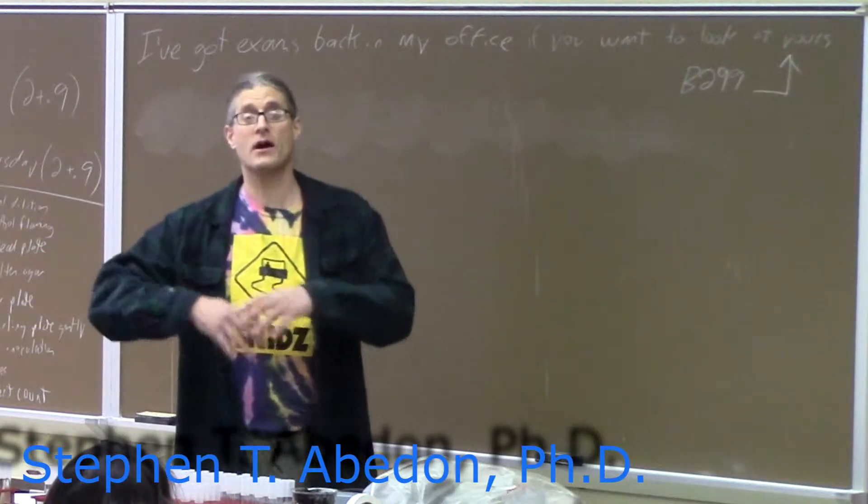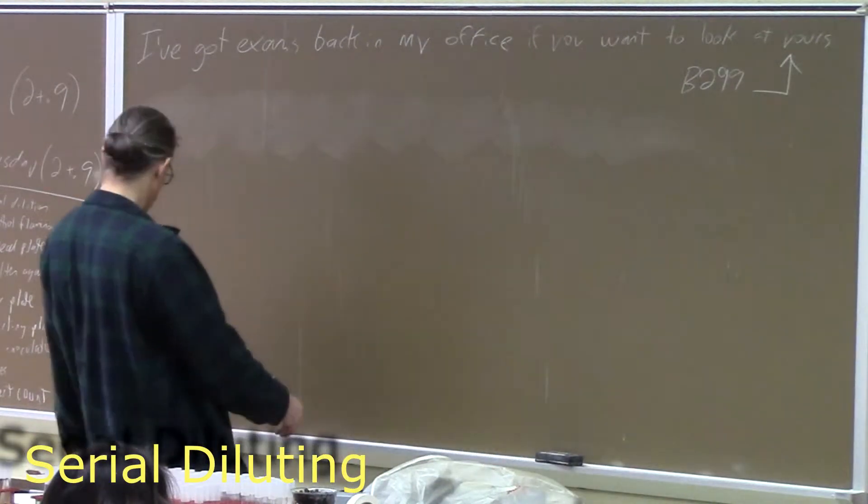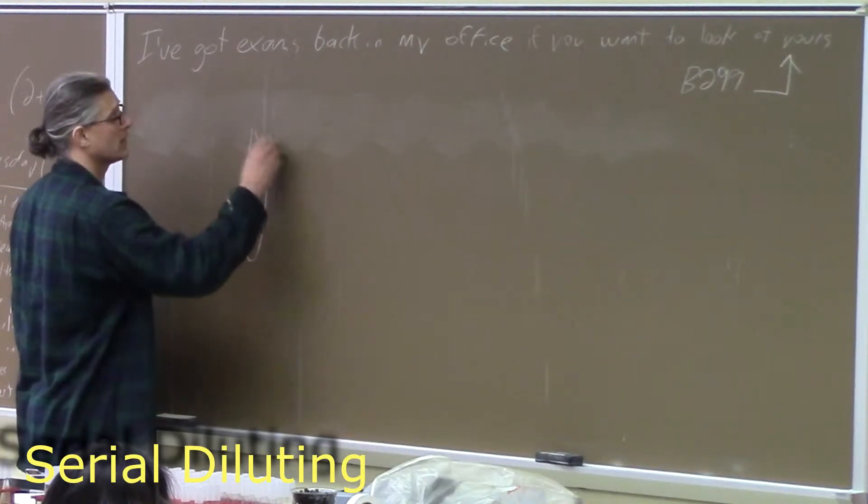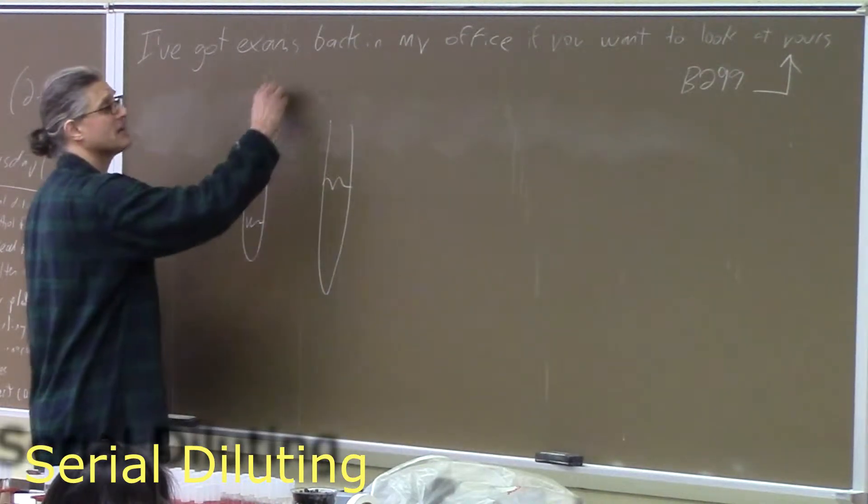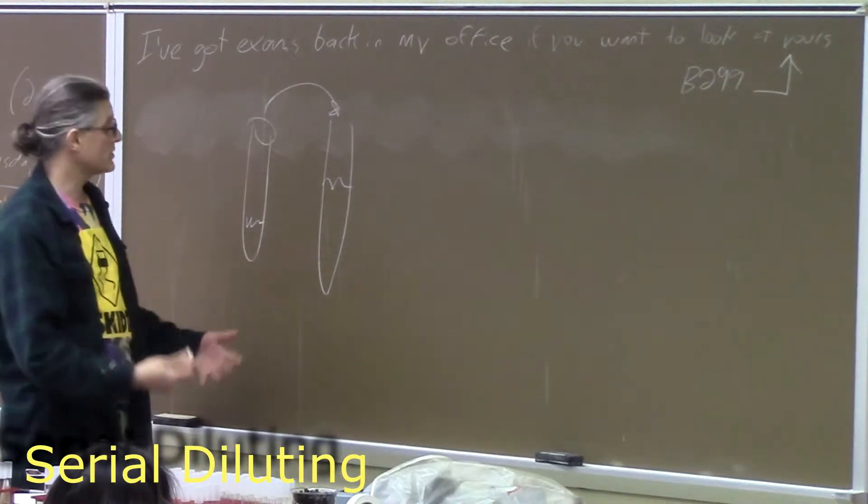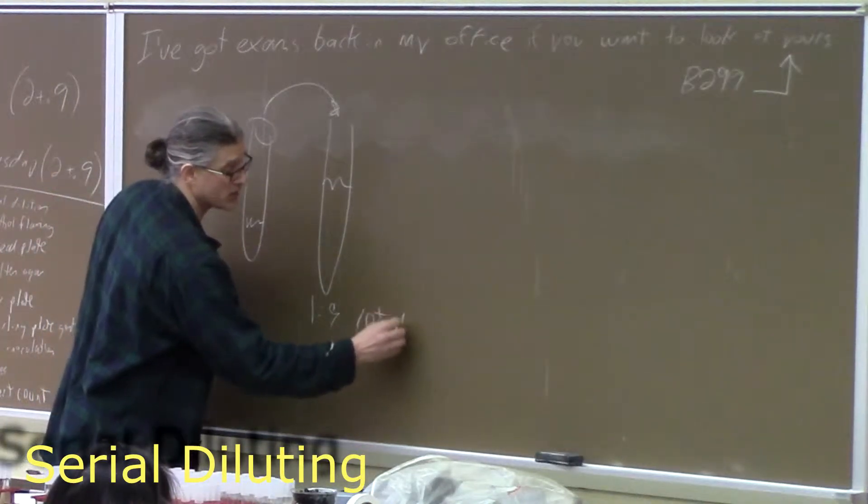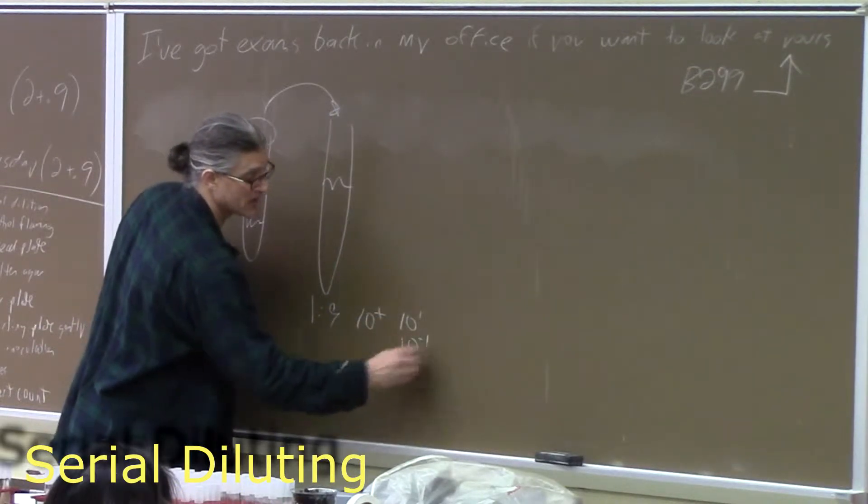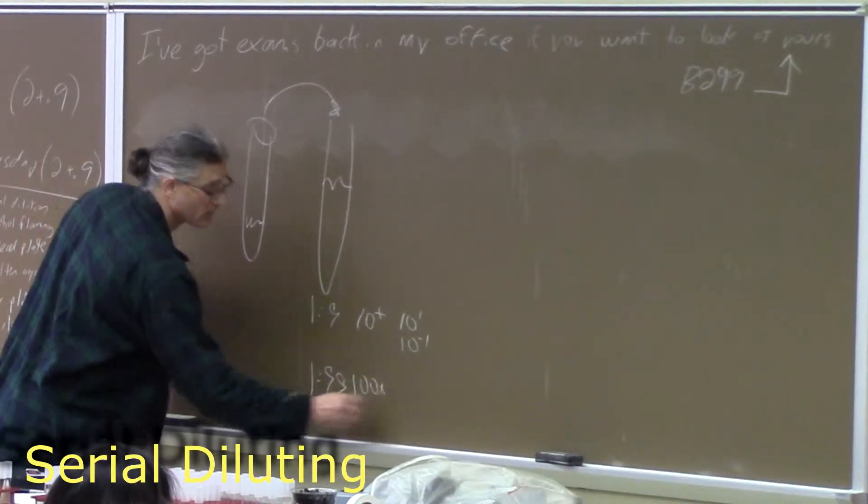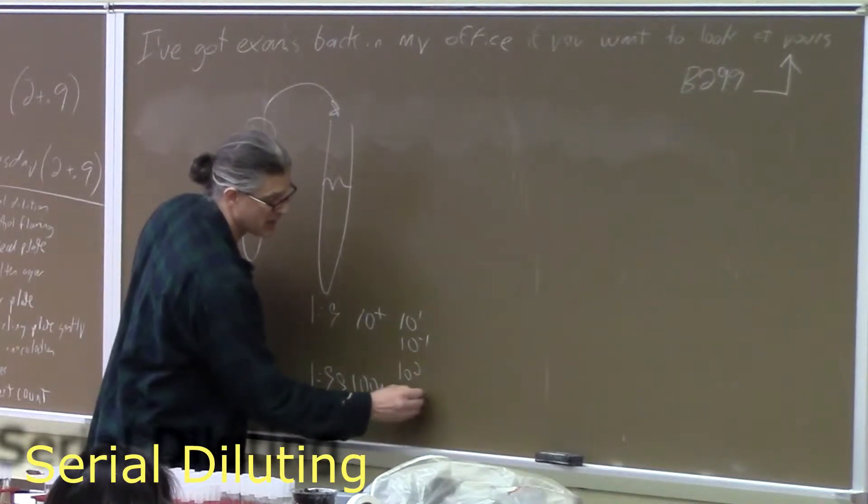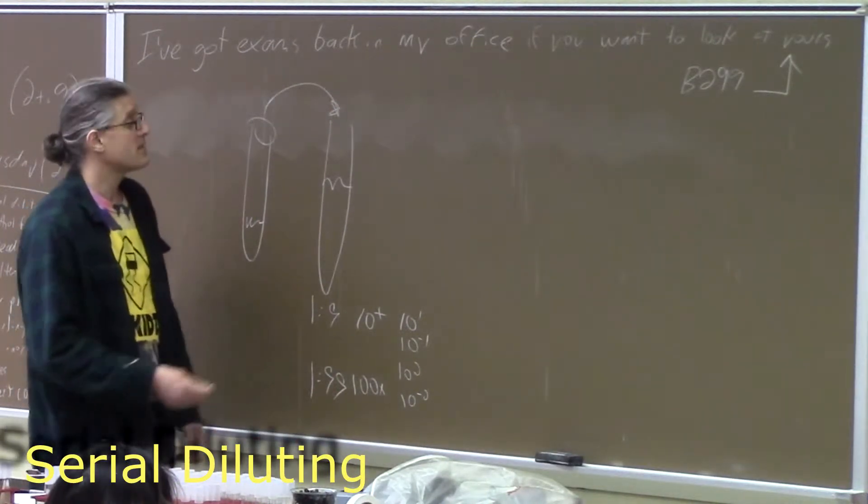In serial diluting, instead of doing our large dilutions all at once, we do them in a series, one after another. So, if we have a tube, it's got some kind of culture in it, we can take a volume out of that tube and put it into a larger volume. We could do a dilution that's 1 to 9. That would be a ten-fold dilution, 10x. Or you could use decimals, either 10 to the 1 or 10 to the minus 1, depending on how you want to think about it. Or you could do a 1 to 99 dilution. That would be a 100-fold dilution, 100x. That would be 10 to the 2, 10 to the minus 2. 10 to the 2 is 100. 10 to the minus 2 is 1 divided by 100. However you want to think about these things. Then, you mix that. Make sure that's well mixed.